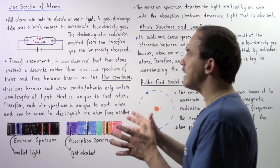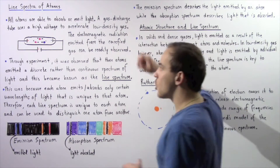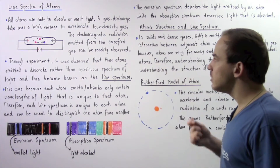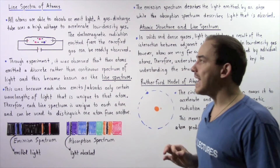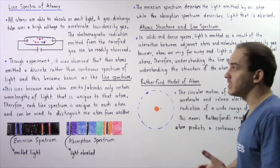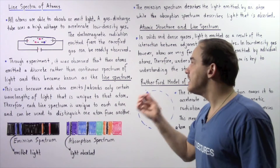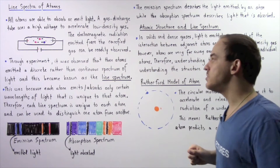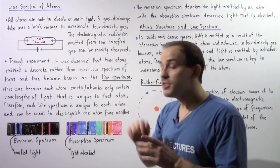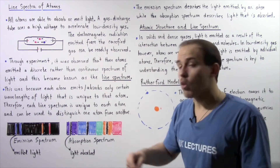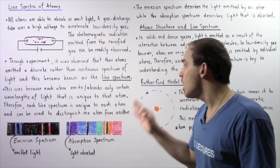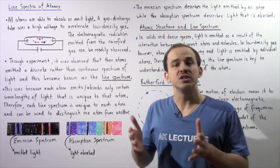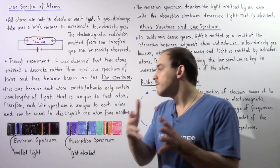All atoms are able to absorb or emit light. A gas discharge tube uses a high voltage to accelerate low-density gas. The electromagnetic radiation emitted by the rarefied gas atoms can be readily observed experimentally. Through experiment, it was observed that individual atoms emitted a discrete rather than continuous spectrum of light, which became known as the line spectrum of that atom. Each atom emits or absorbs only certain wavelengths of light unique to that particular atom, so each line spectrum can be used to distinguish one atom from another.